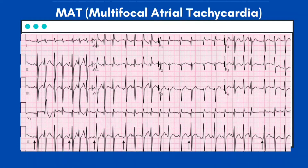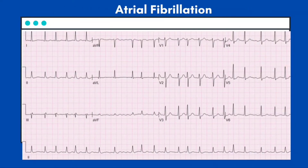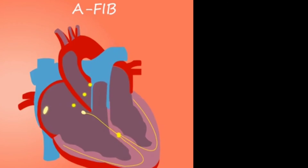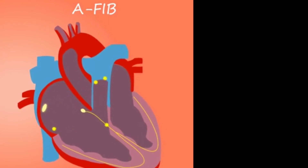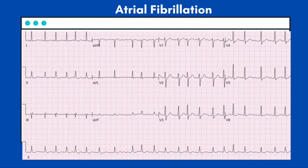Atrial fibrillation (AF) is characterized by a rapid, irregular, and disorganized atrial depolarization rate of 400 to 600 per minute, with fibrillatory waves in the absence of fixed AV block. The ventricular response to AF is irregularly irregular. Be careful not to confuse this dysrhythmia with WAP or MAT — the key distinction is the absence of identifiable P waves in AF.